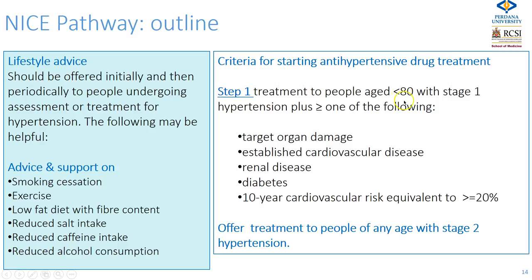Patients aged under 80 with stage 1 hypertension plus one of the following should be offered medication: evidence of target organ damage, previously established cardiovascular disease or renal disease, type 2 diabetes, or a calculated 10-year cardiovascular risk equivalent to 20%. You should offer treatment to people of any age with stage 2 hypertension.